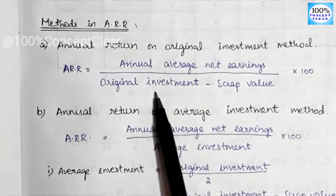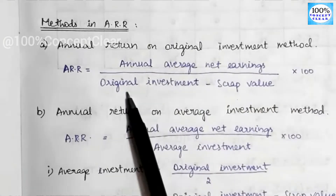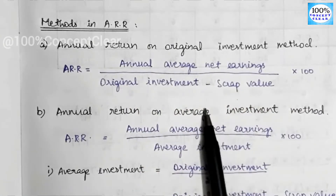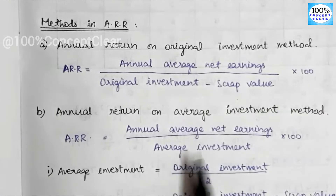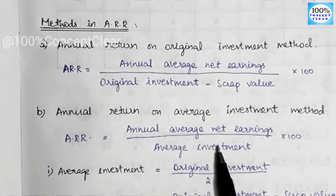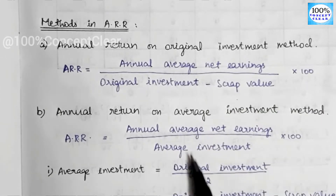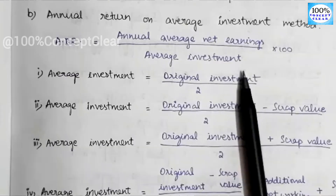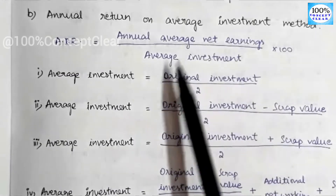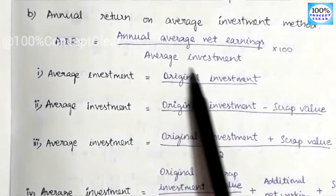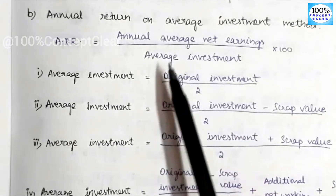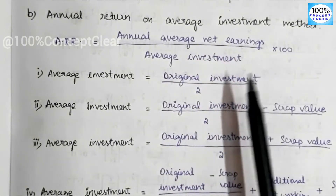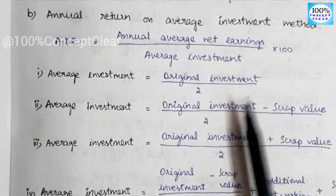For the denominator in the ARR formula, we can use either the usual investment method or the average investment method. There are four formulas available for the average investment method.